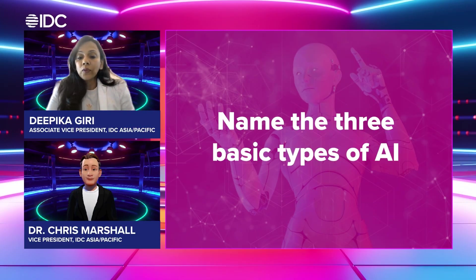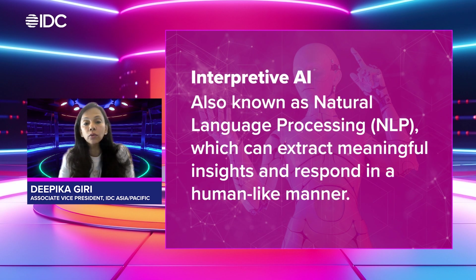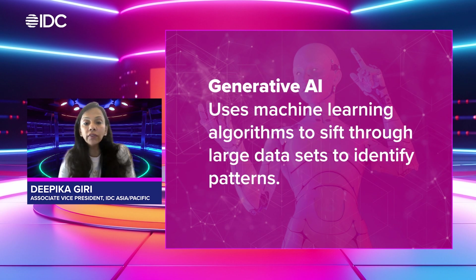Question number one: Name the three basic types of AI. The three basic types of AI are Predictive AI, which helps in forecasting future outcomes by analyzing vast amounts of data; Interpretive AI, also known as Natural Language Processing or NLP, which can extract meaningful insights and respond in a human-like manner; and Generative AI, which uses machine learning algorithms to sift through large data sets to identify patterns.